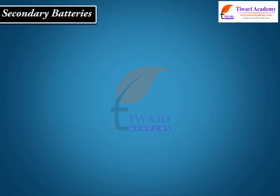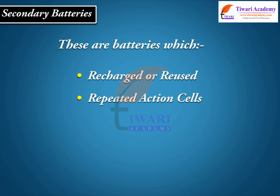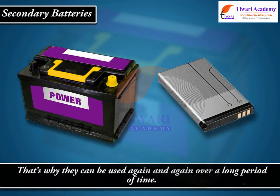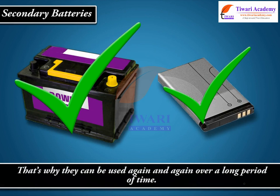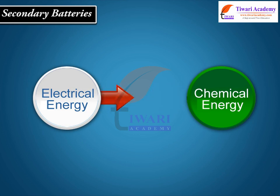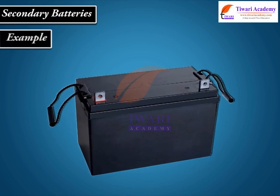Secondary batteries are batteries which can be recharged or reused. They are also called repeated action cells, storage cells, or accumulators. They can be used again and again over a long period of time. Here, electrical energy is stored as chemical energy. For example, lead storage batteries.